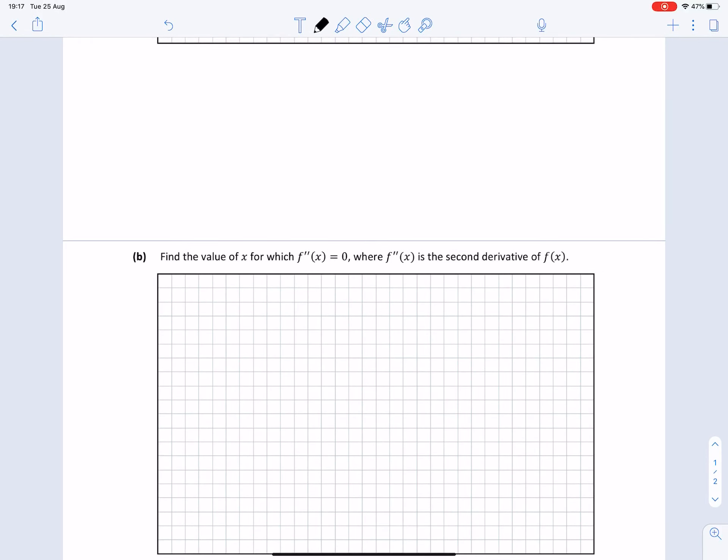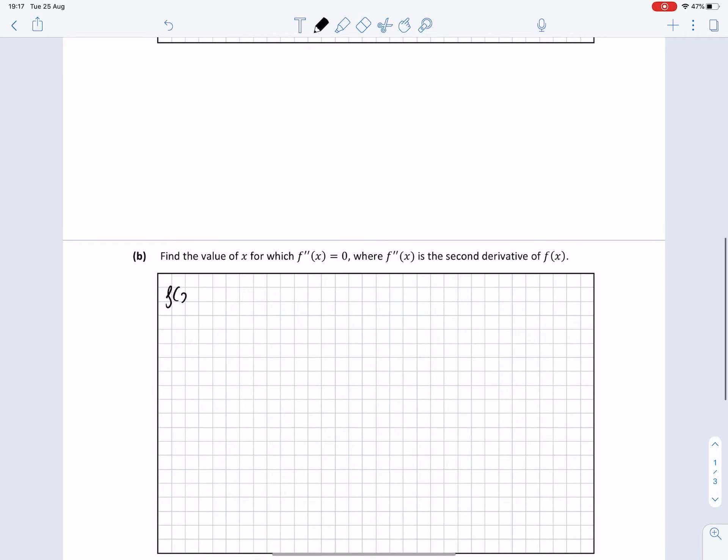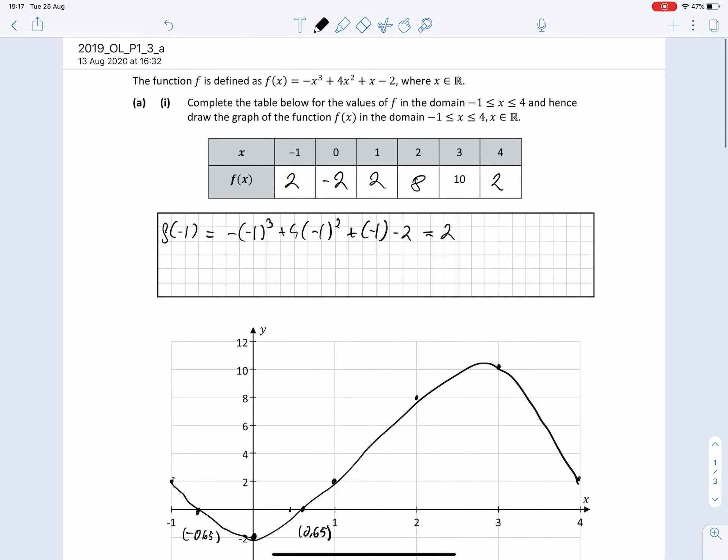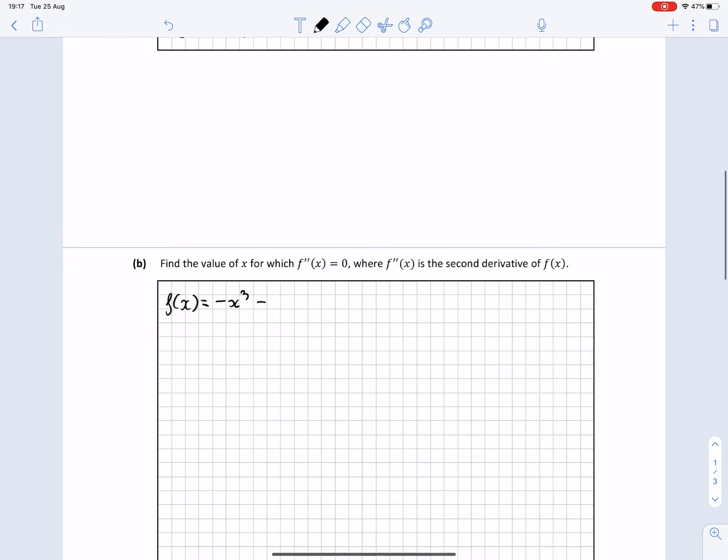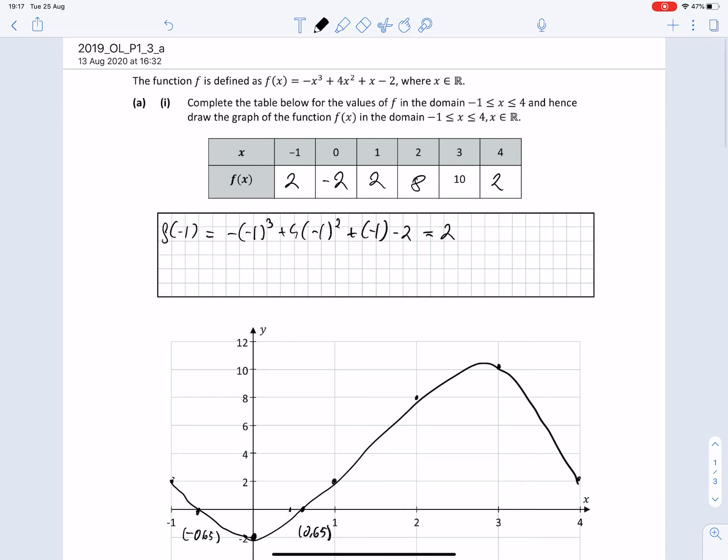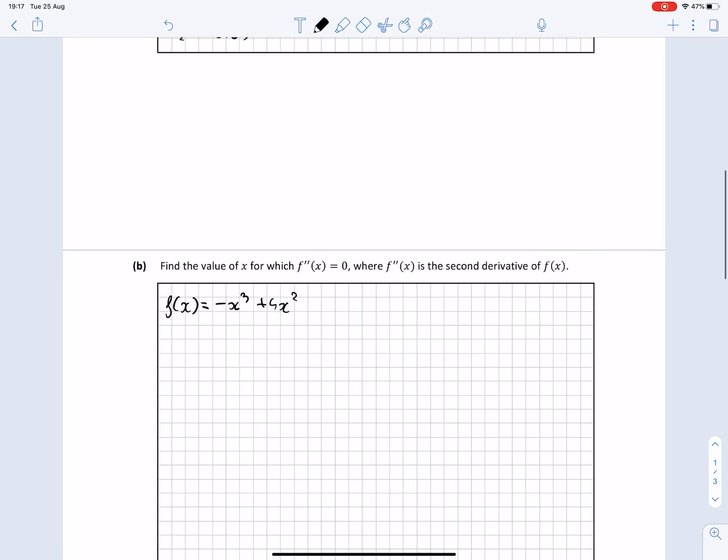And then we have to find the value of x for which the second derivative equals 0. The symbol f double dash is the second derivative, so I'm going to rewrite my function. The function is given by f(x) equals minus x cubed plus 4x squared plus x minus 2.